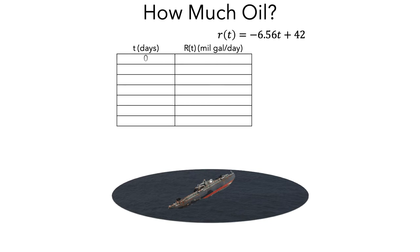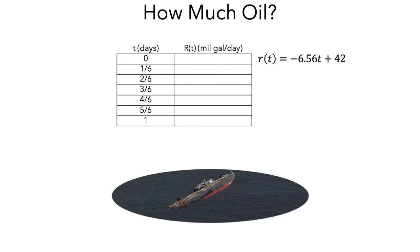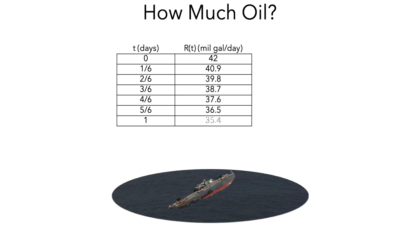For example, let's split the day into 6 intervals, where the first interval starts at time 0 and ends at time 1/6 of a day, the second from 1/6 to 2/6 of a day, and so on. We need to figure out what the spilling rate is at each of these moments in time using the rate formula. Plugging 0 in gives 42 million gallons per day, and plugging in 1/6 of a day gives 40.9 million gallons per day. We can keep doing this to find the rest of the rates in the table.